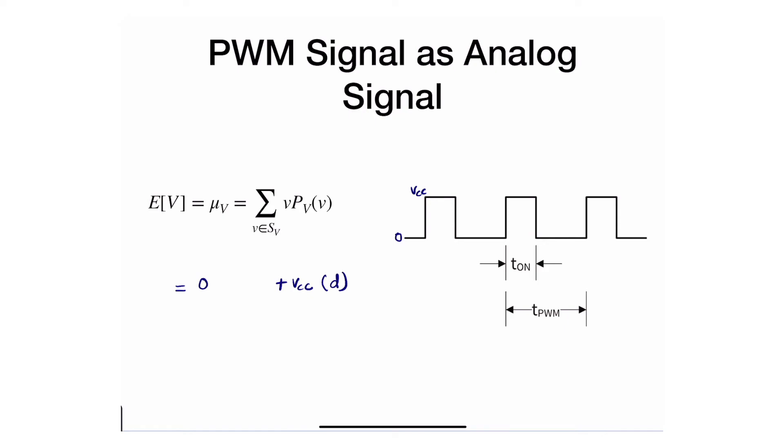Of course, if it's d in the on position, that means it's one minus d in the off position. So if you do these calculations and you do the math, you will see that it's just basically d times VCC. d here is actually the duty cycle and VCC is that voltage.